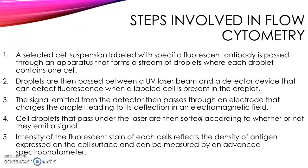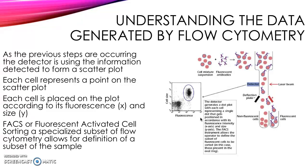In the third step, the signal emitted from the detector then passes through an electrode that charges the droplet, leading to its deflection in the electromagnetic field. In the fourth step, those same cell droplets that pass under the laser beam are then sorted according to whether or not they emit a signal. In step five, the intensity of the fluorescent stain of each cell reflects the density of antigen expressed on the cell surface and can be measured by an advanced spectrophotometer.